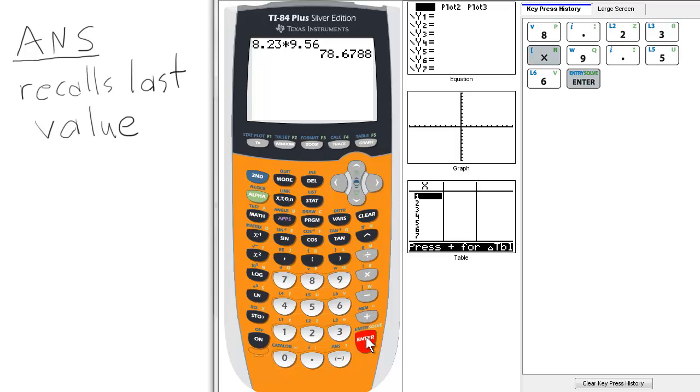So rather than typing 78.6788 again, what we could do is type second and the negative sign for the answer function, minus 11.